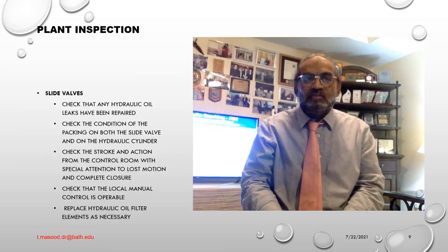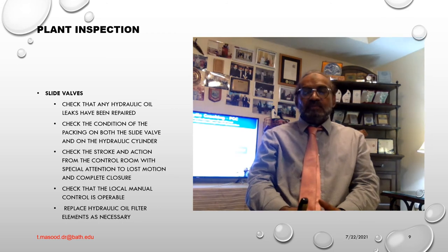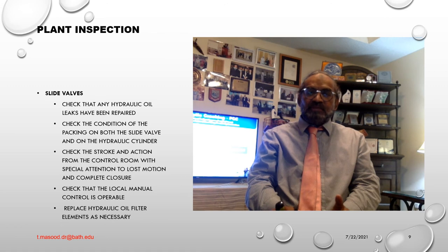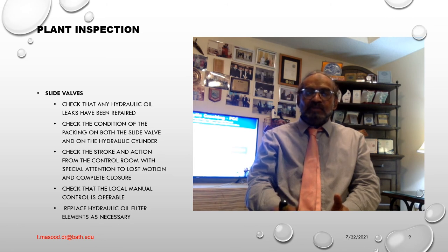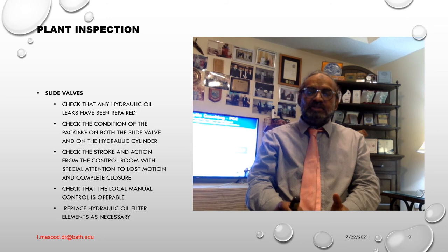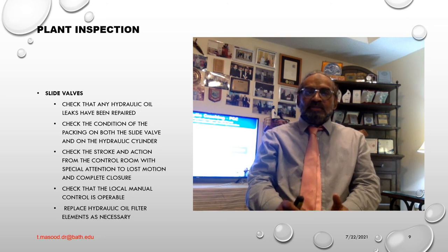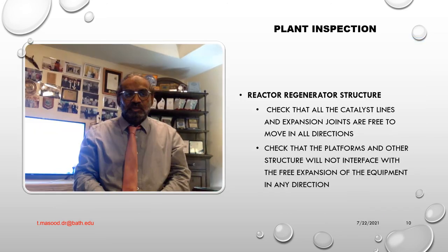Slide valves: number one — check that any hydraulic oil leaks have been repaired. Number two — check the condition of the packing on both the slide valve and the hydraulic cylinder. Number three — check the stroke and access from the control room with special attention to lost motion and complete closure. Number four — check that the local manual control is operable. Number five — replace the hydraulic oil filter element as necessary.